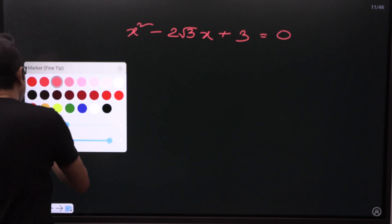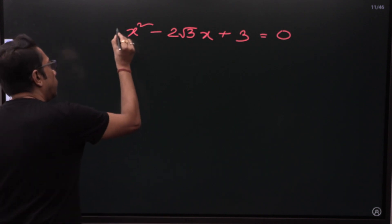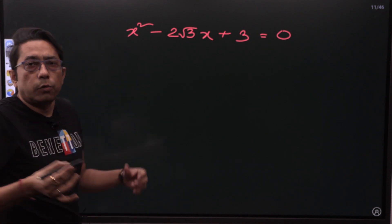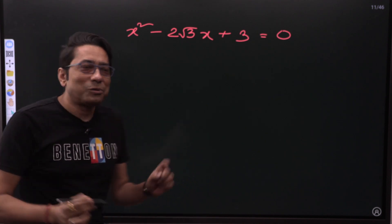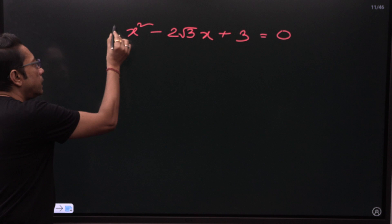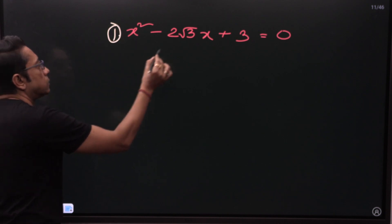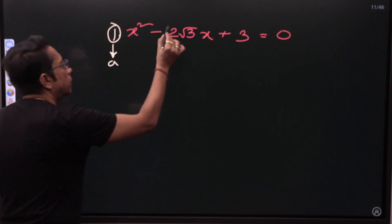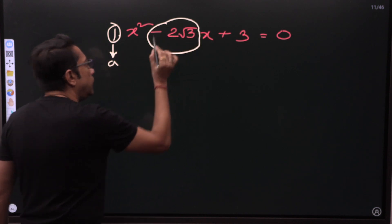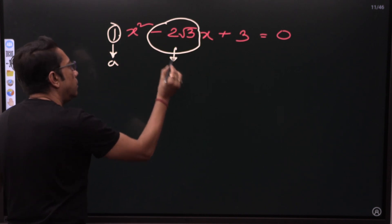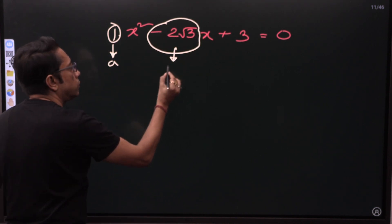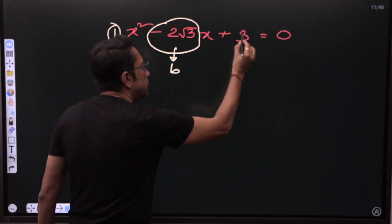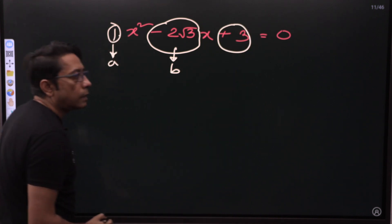Let us find A, B, and C. The coefficient of X squared — since there's nothing written with it, it means it's 1. So A equals 1. The coefficient of X is minus 2 root 3, so B equals minus 2 root 3. And C equals plus 3.